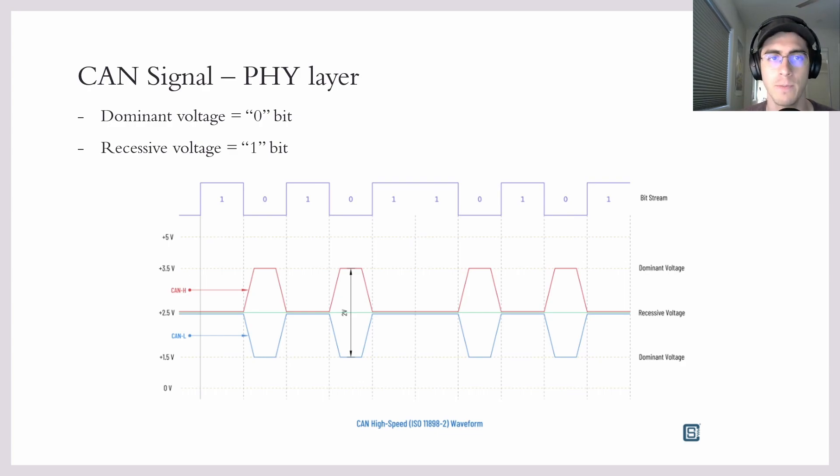So the CAN signal voltage level specification is as follows. You have two wires, as I mentioned before. We'll call one of them CAN high and the other CAN low for obvious reasons. Now, it is the difference between these two wires that determines whether or not a bit is a zero or a one.